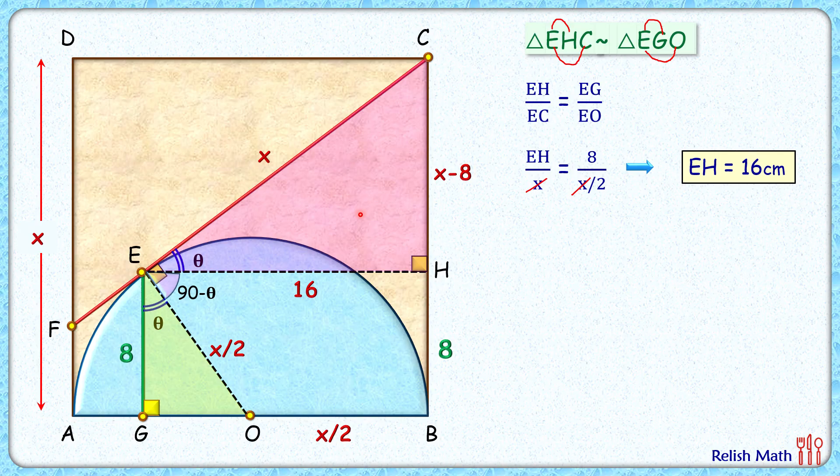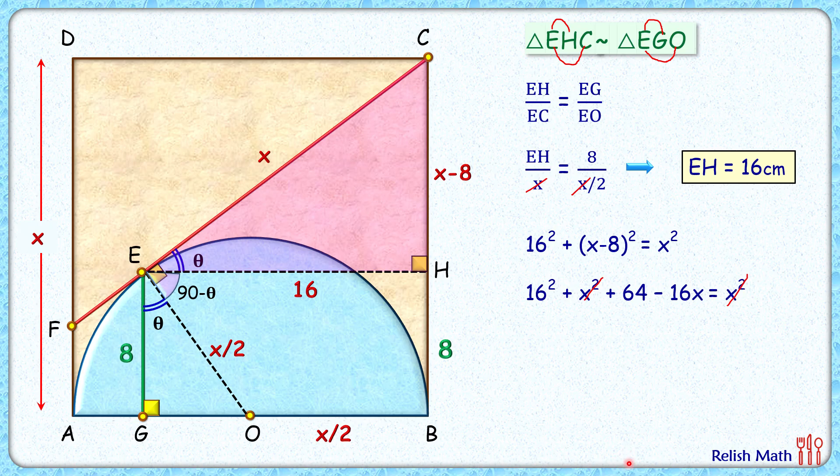Now if you look at this pink right angle triangle, applying Pythagoras theorem we'll get 16 squared plus x minus 8 squared equals x squared. Now opening up this bracket, applying a minus b whole squared identity, simplifying it, both the side x squared will get cancelled and we'll get 16x equals 320 or x equals 20 centimeters.